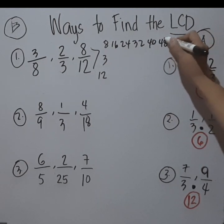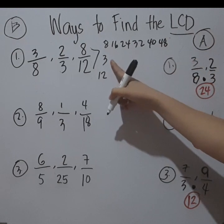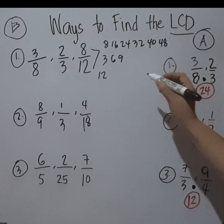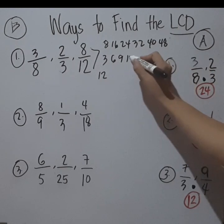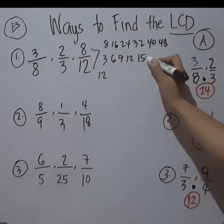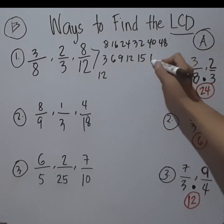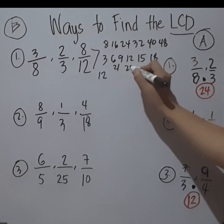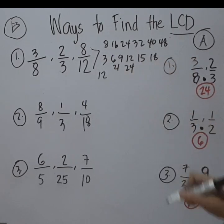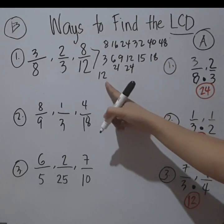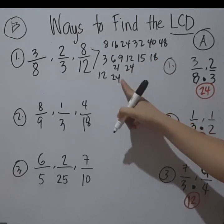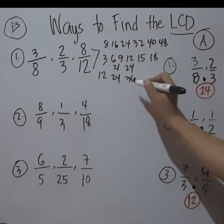For 3, same process: 3 plus 3 is 6, plus 3 is 9, and so on — 12, 15, 18, 21, 24. And for 12, same again: 12 plus 12 is 24, plus 12 is 36.